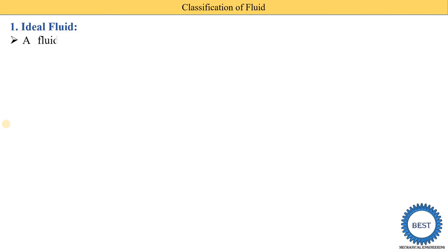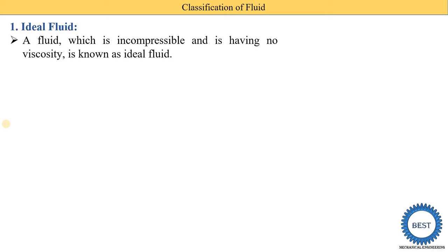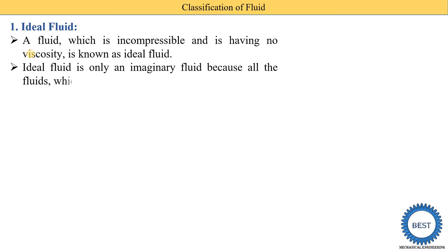First we understand the ideal fluid. A fluid which is incompressible — incompressible means the value of k is equal to zero — and having no viscosity, where viscosity is denoted by mu, so mu is equal to zero. Fluid is incompressible means k=0, viscosity is equal to zero, and surface tension is equal to zero. It is known as the ideal fluid.